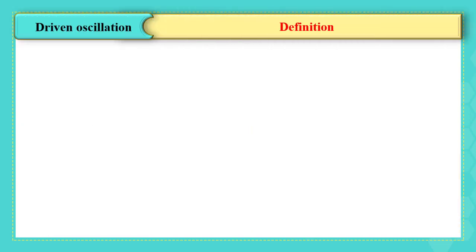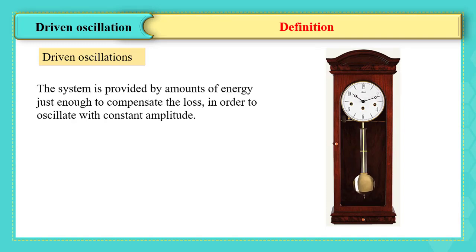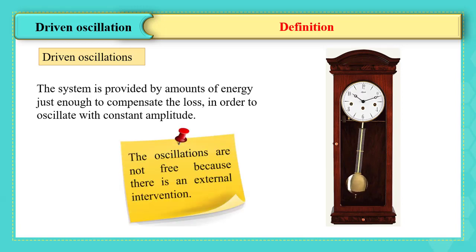The last idea, driven oscillations. The system is considered driven when it is provided by amounts of energy just enough to compensate the loss in order to oscillate with constant amplitude. The oscillations are not free because there is an external intervention.